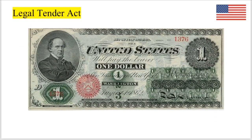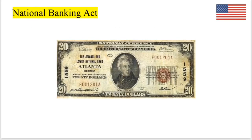The Legal Tender Act of 1862 was passed to finance the Civil War. It allowed the federal government, for the first time, to print paper money — called greenbacks — but these were not backed by an equal amount of gold or silver. By the end of the war, this caused significant inflation, with prices in the North rising by about 80%. Along with this, the North created a new national banking system in 1863 with the National Banking Act — the first unified banking network since Andrew Jackson vetoed the recharter of the Bank of the United States in the 1830s.